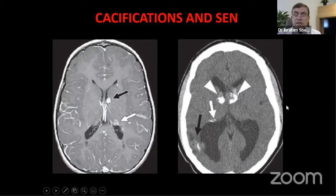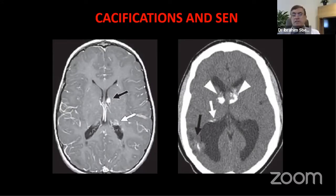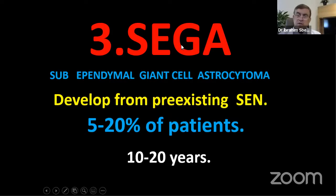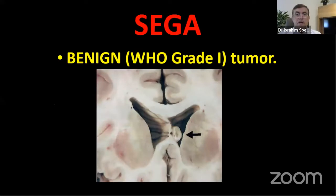When calcification is seen, one must ask whether it is normal, physiological, or pathological. The third and main topic is the SEGA — subependymal giant cell astrocytoma — occurring in 5 to 20% of patients. Although less common, it can be a killer. It is a benign, grade 1 astrocytoma. On CT it may or may not be calcified, and can range from small to large in size.